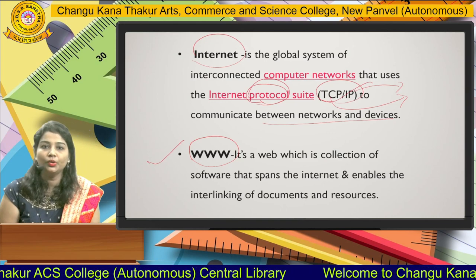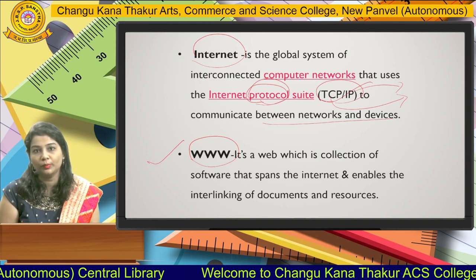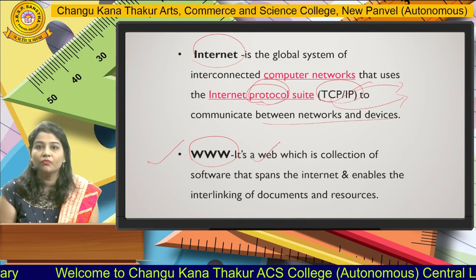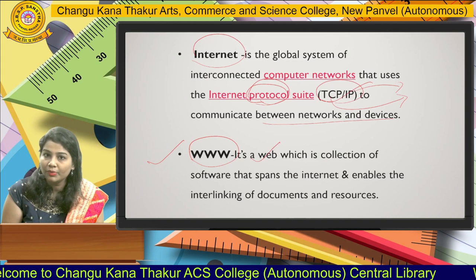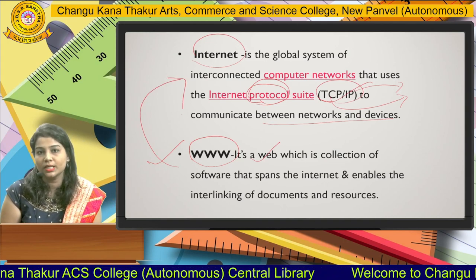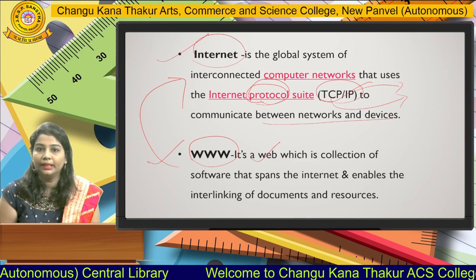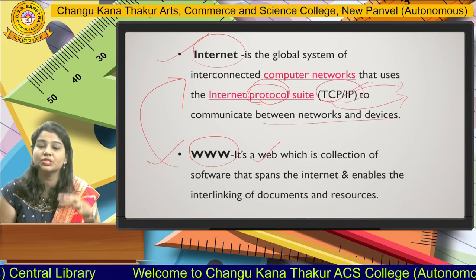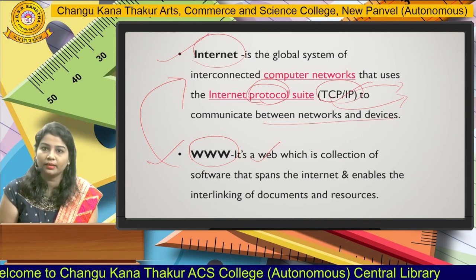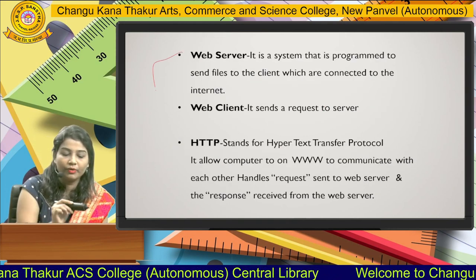Now we will move forward to the WWW. WWW, as everybody knows, stands for World Wide Web. It is also called the web, which is a collection of software and programs that spans the internet and helps to interlink documents as well as resources. So internet is a different thing and WWW is a different thing — it is a set of programs available on the internet. Next is web server, web client, and HTTP.